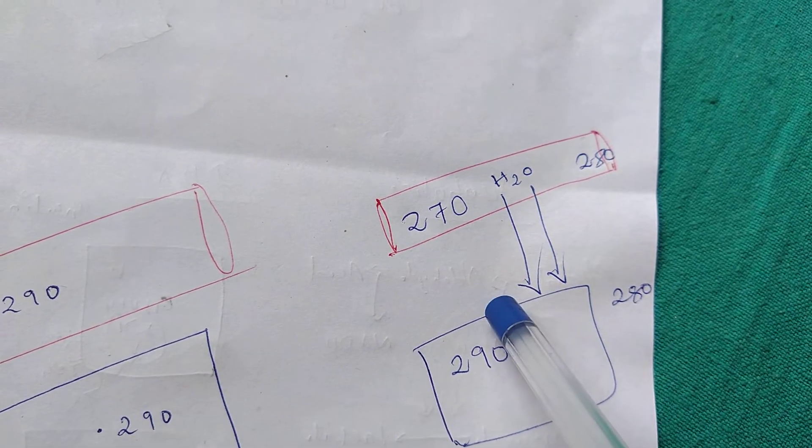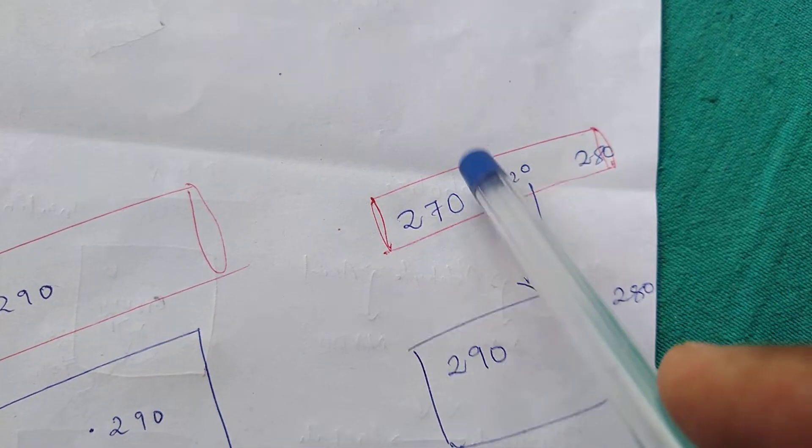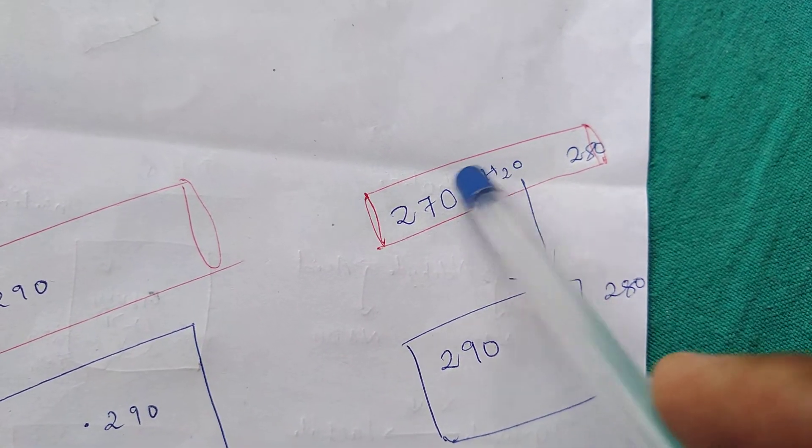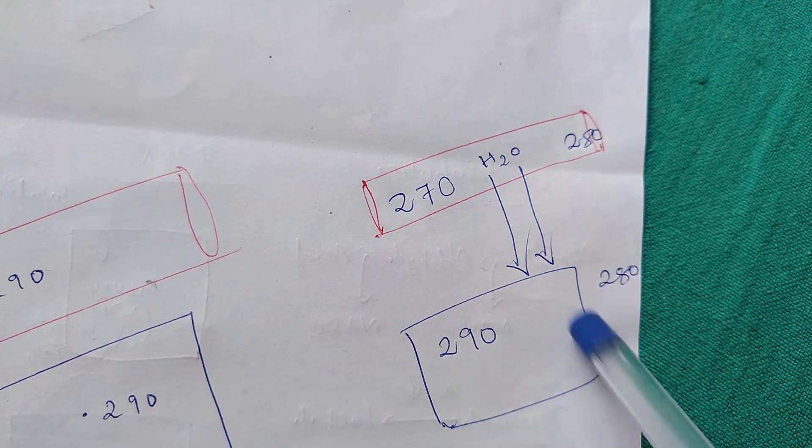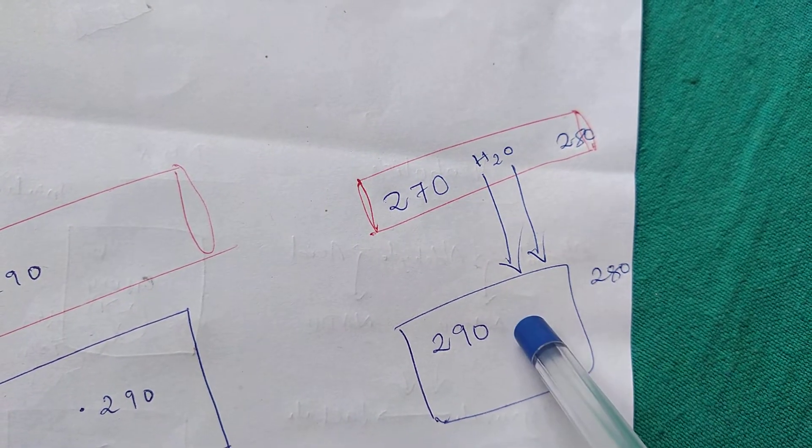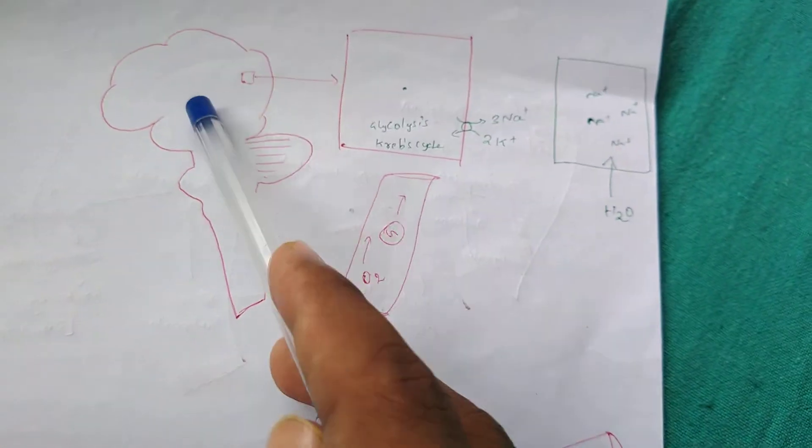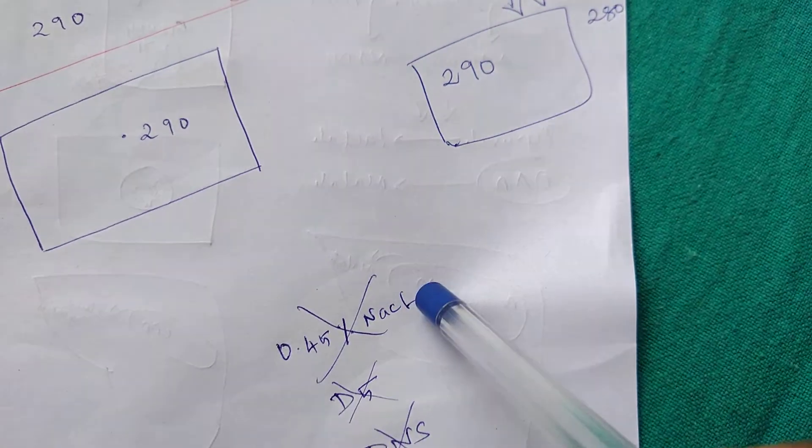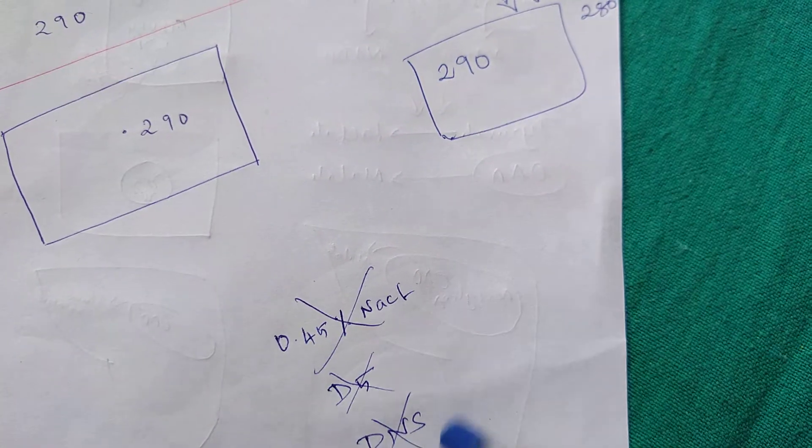So this water part will move from vascular compartment to the brain cells compartment, so the brain cell edema will further aggravate. So the brain edema increases. That's why we should avoid hypo-osmotic NaCl and dextrose-containing fluids.